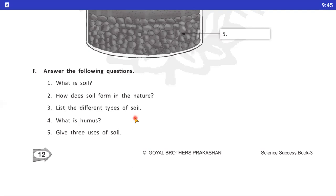Question number 4. What is humus? The remains of dead plants and animals present in the soil are called humus. Soil mein joh dead plants and animals present hooti hai, unhein hum humus kehte hai. Question number 5. Give three uses of soil. Soil ke humein three uses batanye hai.